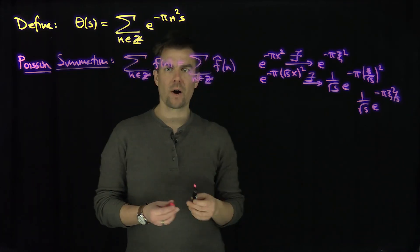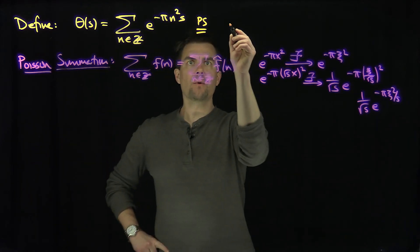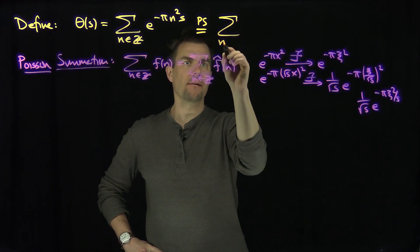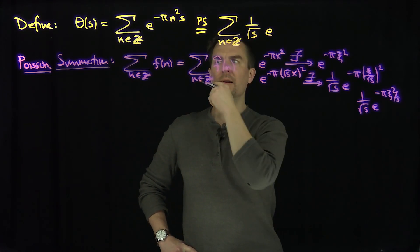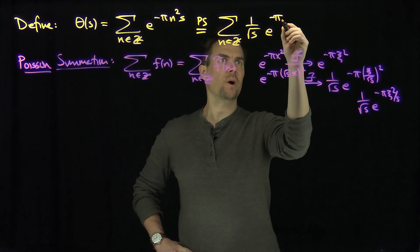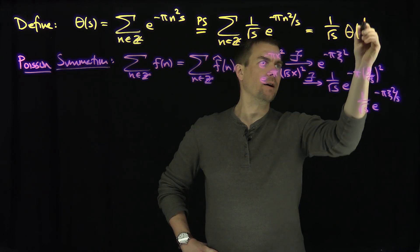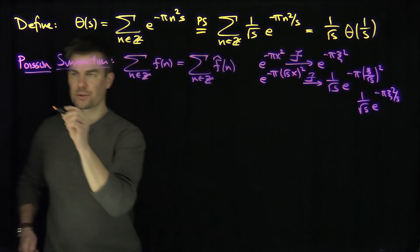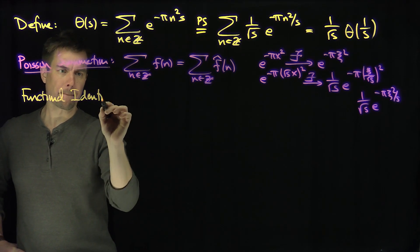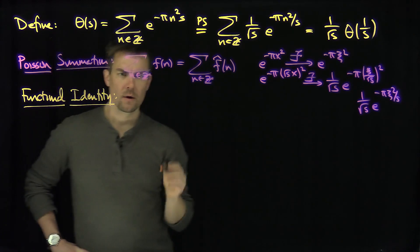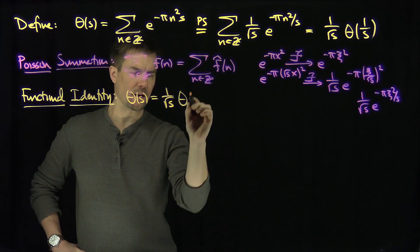So by Poisson summation, this is equal to the sum over n in Z of 1 over root s times e to the negative pi n squared over s. This is equal to 1 over root s times the same function theta at 1 over s. And so this is our functional identity for the theta function: theta of s is equal to 1 over the square root of s times theta of 1 over s.